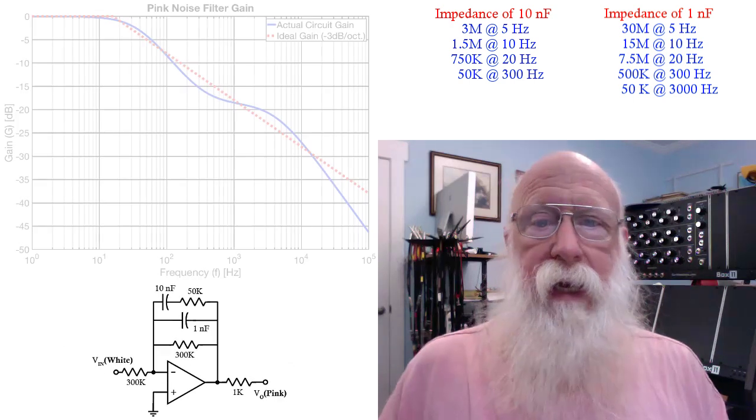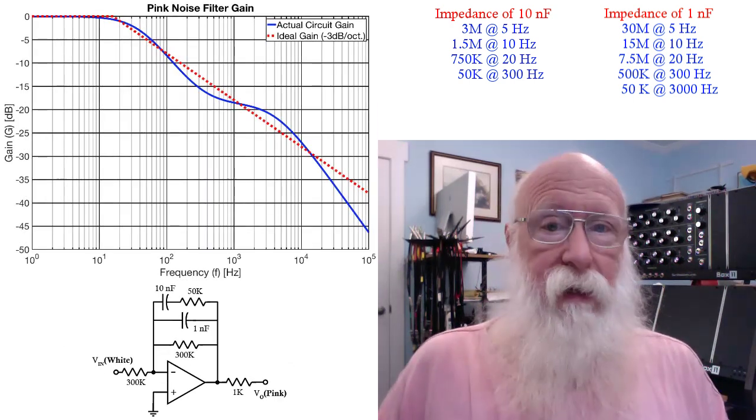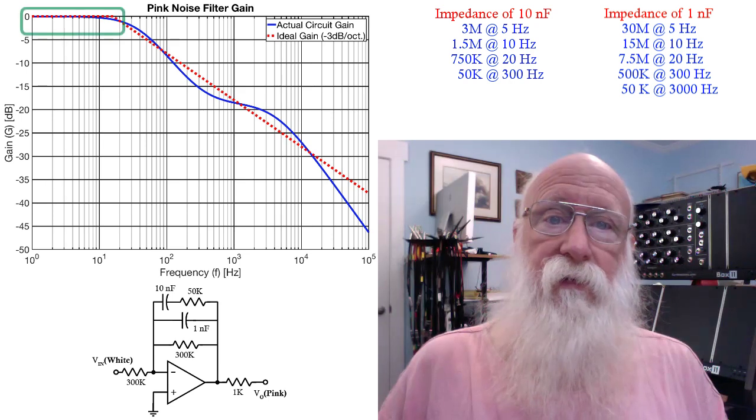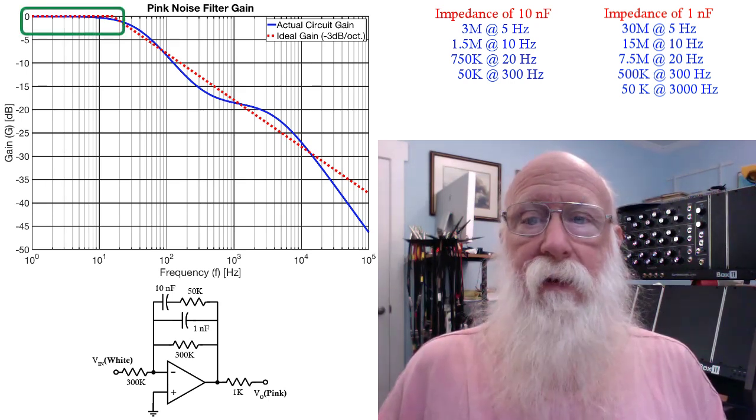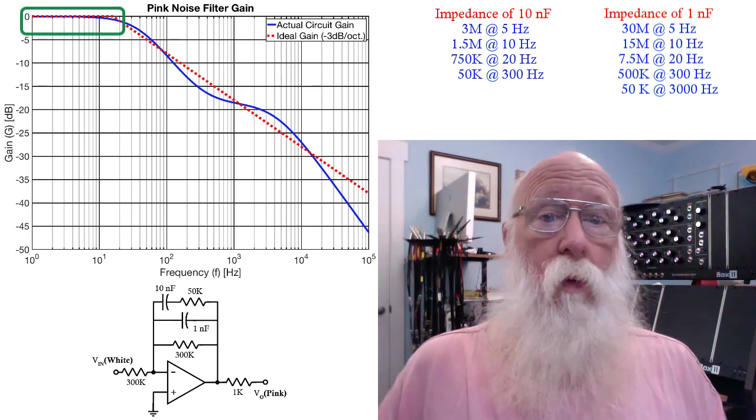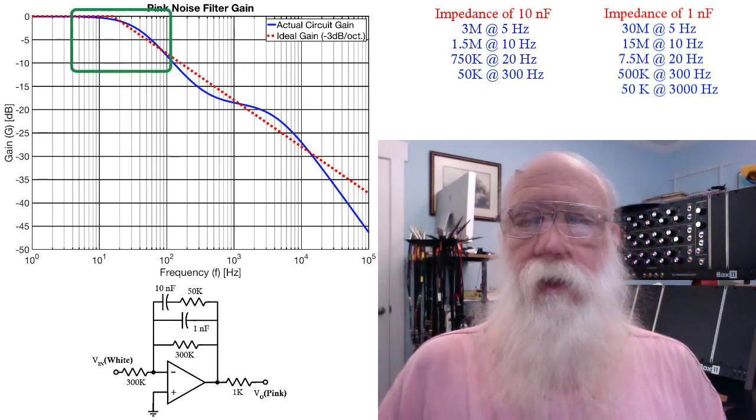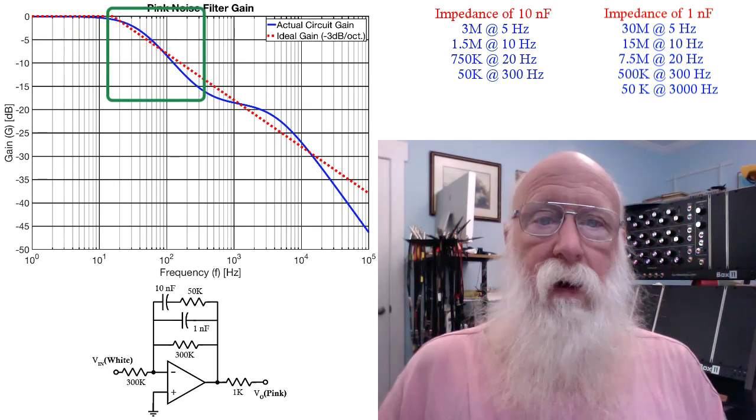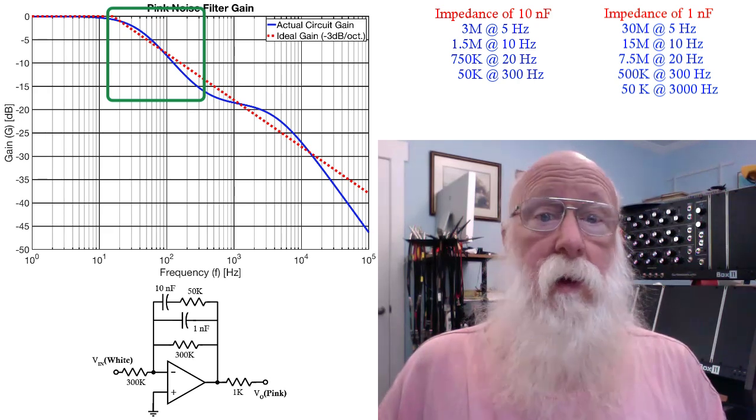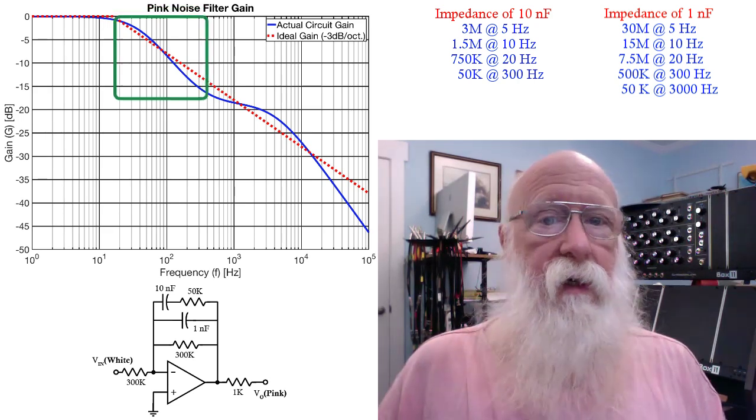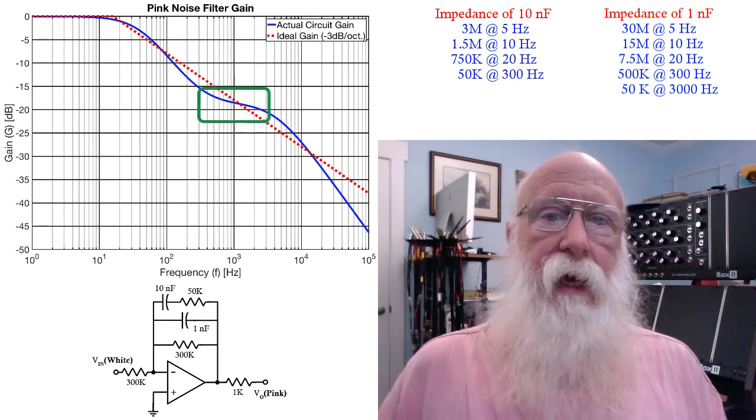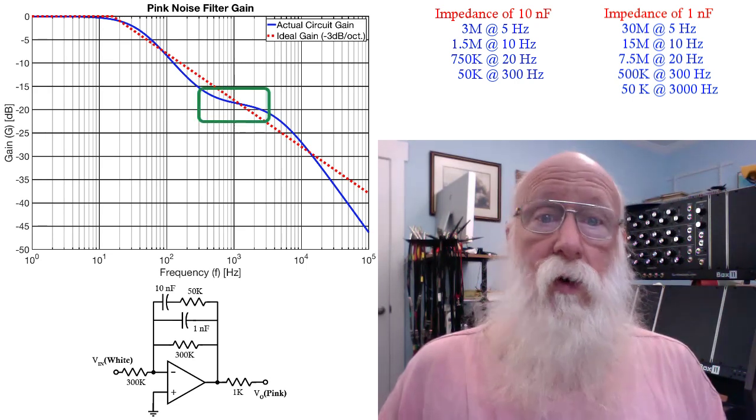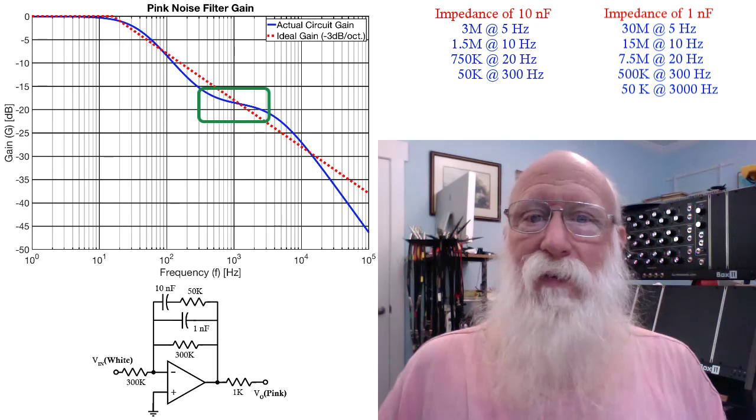So if we look at our plot again, you'll see exactly what we described. At low frequencies, sub-audio frequencies, the response is fairly flat. And then starting around 15 or 20 hertz, the response starts to drop off at about minus 6 dB per octave until you get into the low 100 hertz range. And then it starts leveling out as that 10 nanofarad 50K branch starts approaching a minimum of 50K.